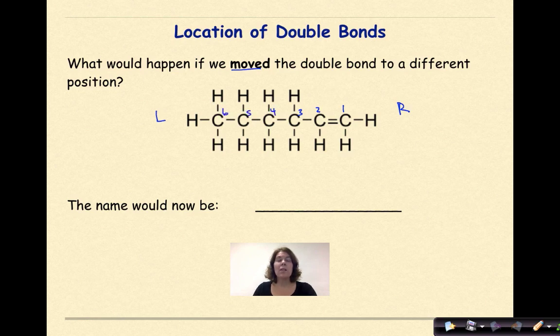It's still hex, still ENE because we have our double bond right here. But now to indicate the location of that double bond, we know that it starts at carbon 1. So the proper name for this compound would be 1-hexene. So because the double bond is between carbon 1 and 2, it's 1-hexene.